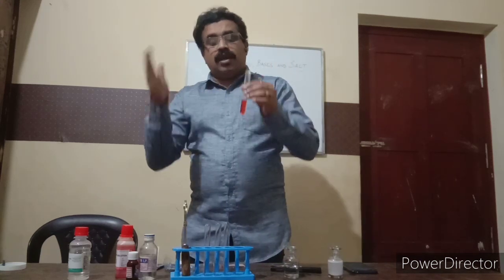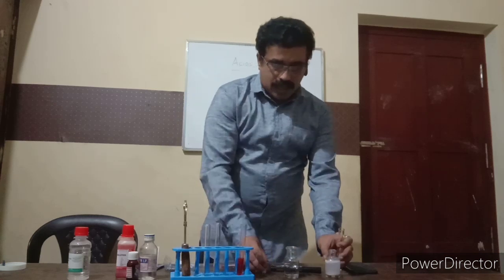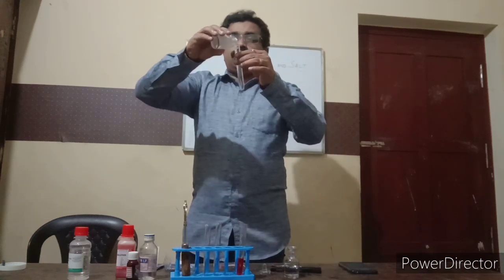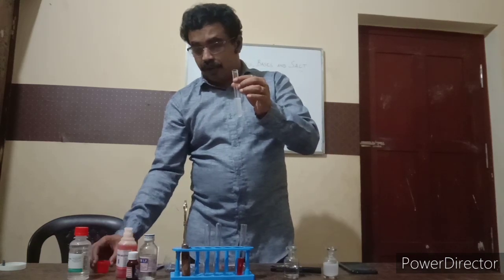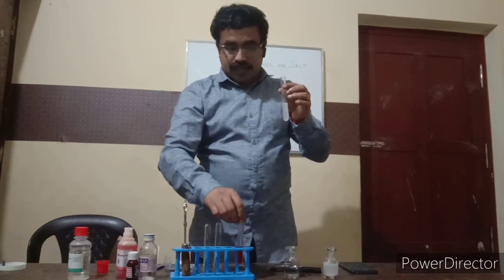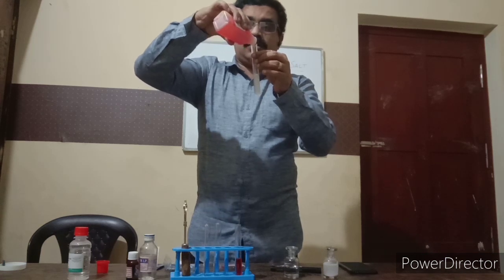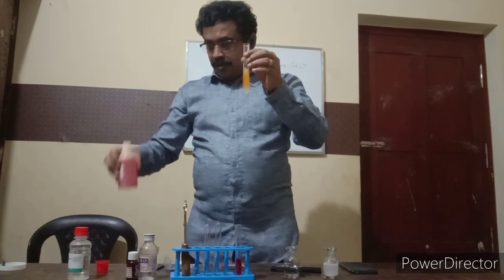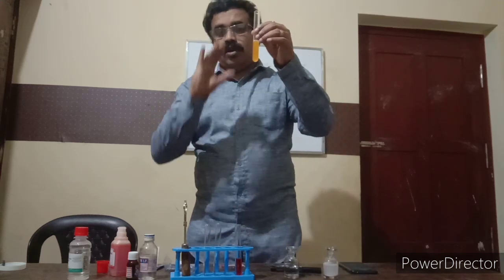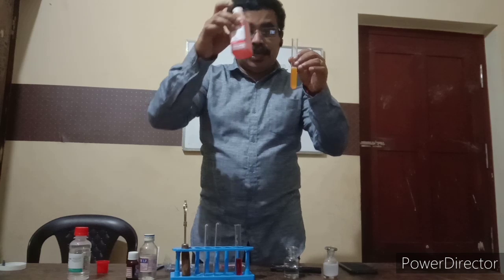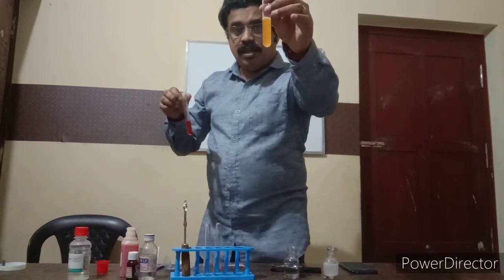The same test — I will show what happens when methyl orange is added to a basic solution. I will add few ml of basic solution to a test tube. To this, I am adding the same methyl orange. You can see the change — it turns to yellow in color. So in basic solution, when methyl orange is added, it turns to yellow. When added to acid it was red, when added to base it is yellow.